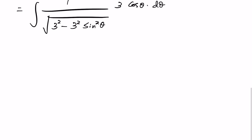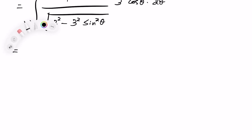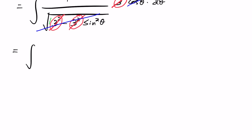We factor out 3² from inside the square root; the 3 comes out of the square root and cancels with the 3 in the numerator. Inside the square root we are left with 1 − sin² θ, which equals cos² θ by the Pythagorean identity. That gives a first-order cos θ in the denominator, which cancels with the cos θ in the numerator, leaving the integral of 1 dθ.